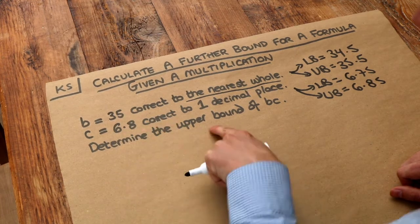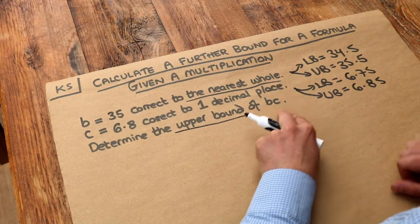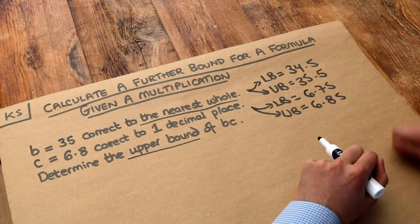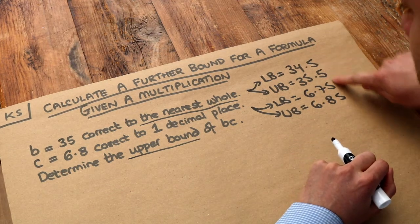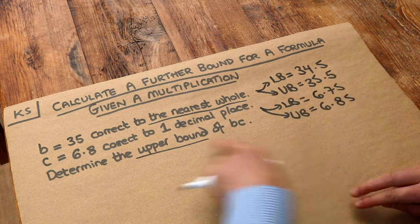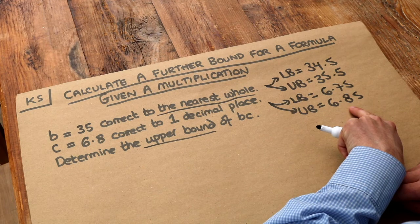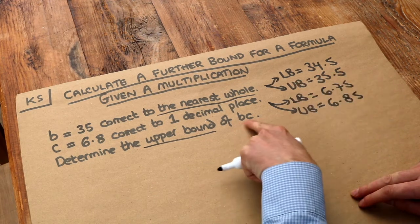Now in each case, we can choose any value between the lower bound and the upper bound. So for B we can use between 34.5 and 35.5, and for C we need between 6.75 and 6.85, but we want to end up with the biggest product possible.